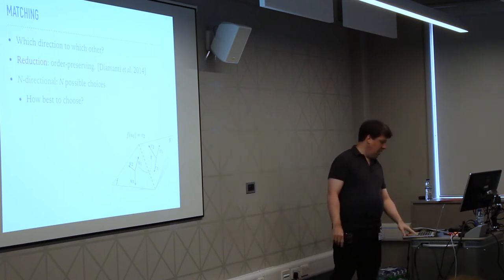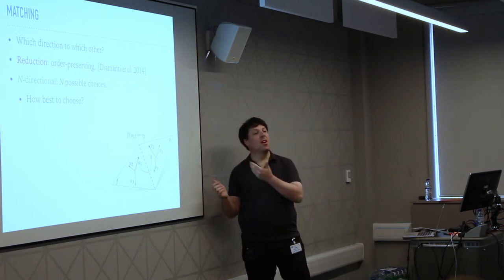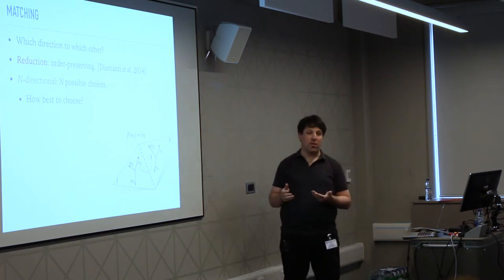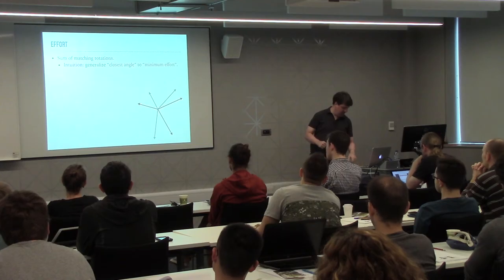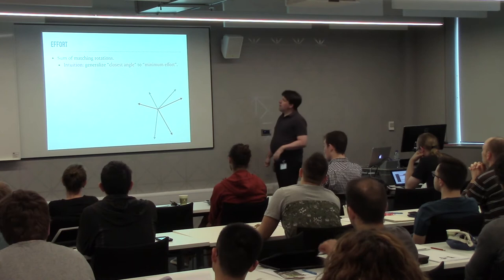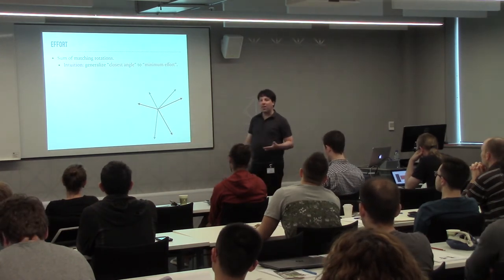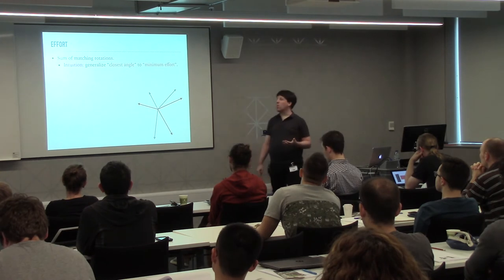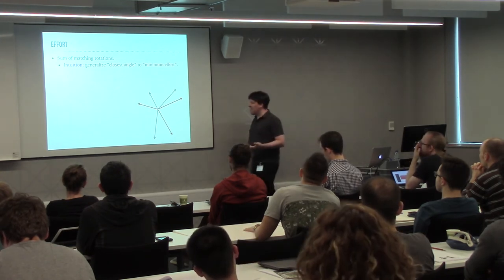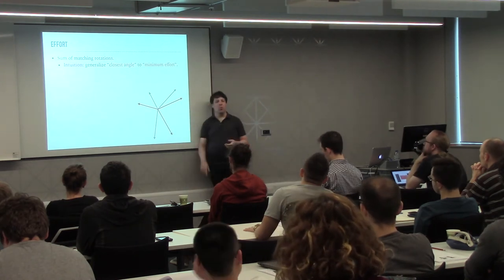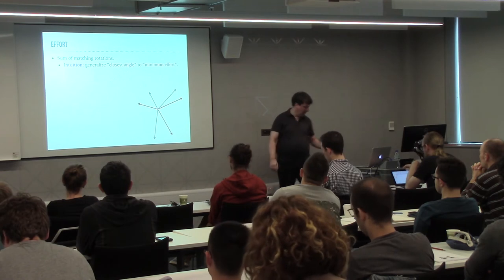There are possible choices, but what is the best one? How do I reduce it to this principal notion? For that I need an extra insight. Instead of a closest angle, I will talk about something called minimum effort — how much effort I have to spend to make one set of vectors into the other.